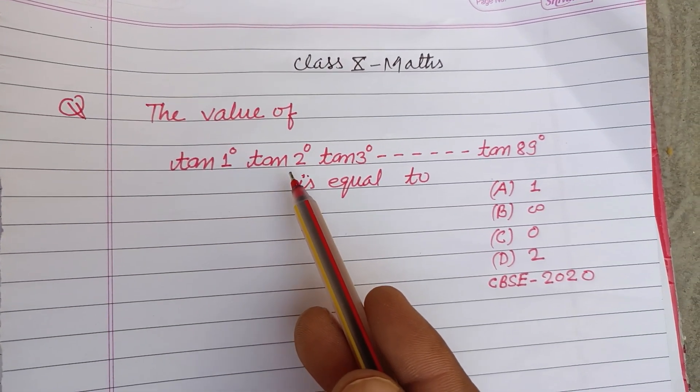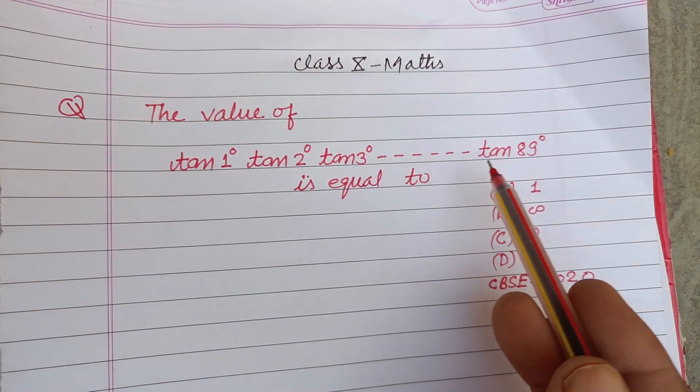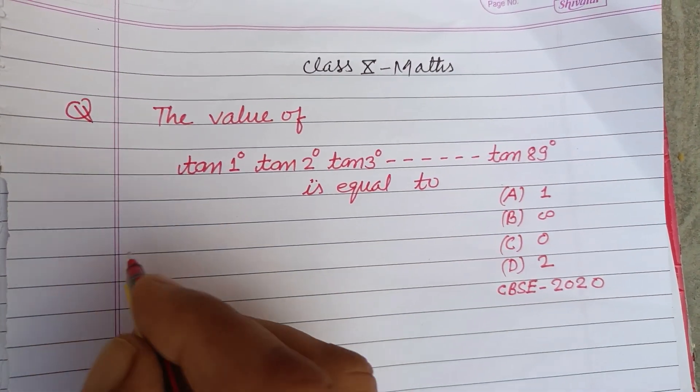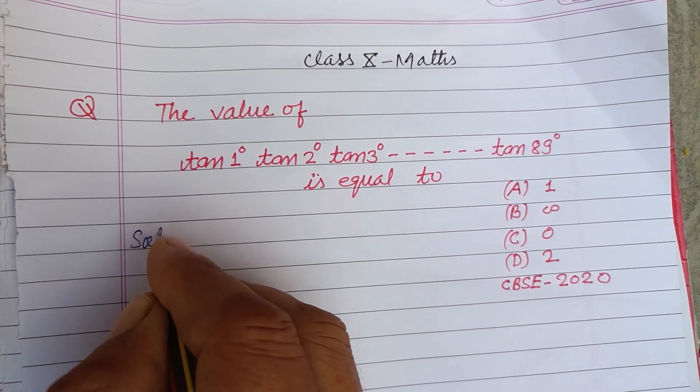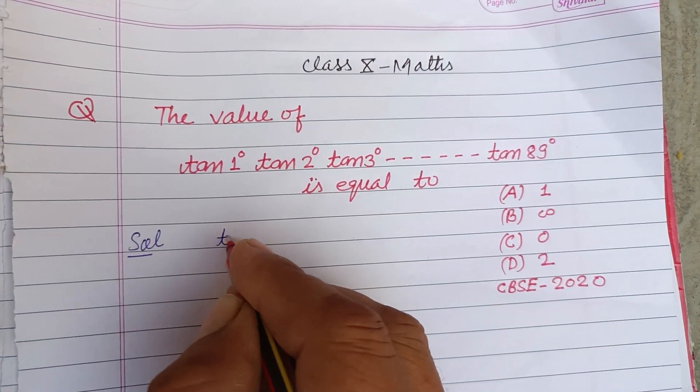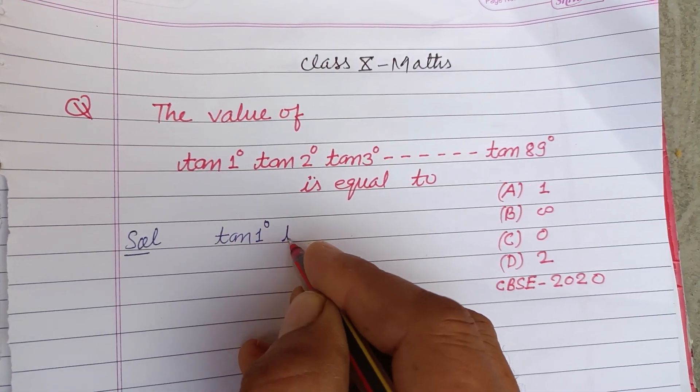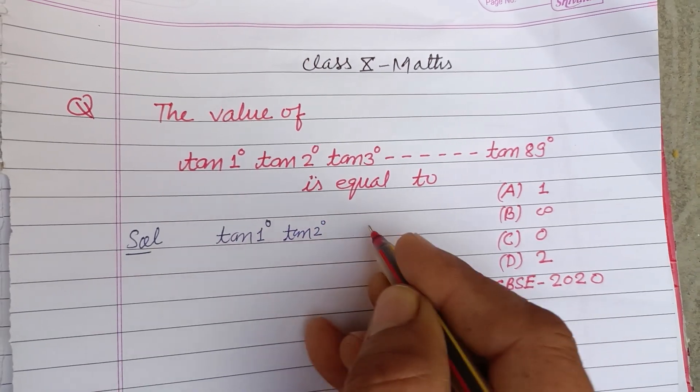The value of tan1° × tan2° × tan3° ... × tan89° is equal to. So students, here we want to find out the value of tan1°, tan2°,